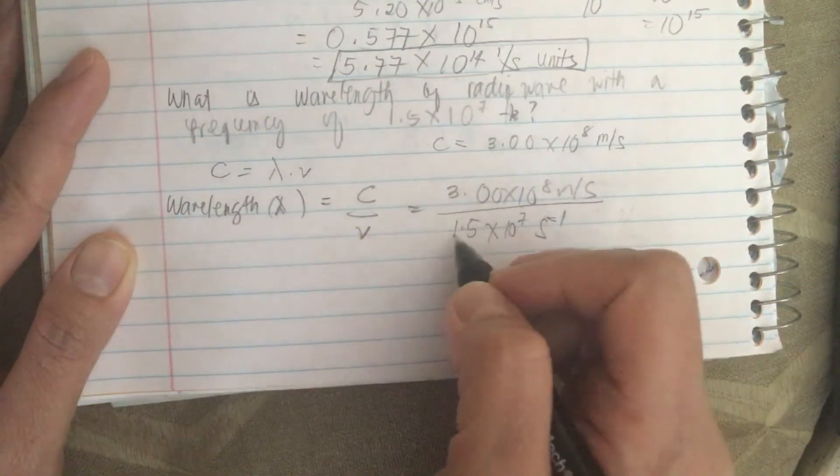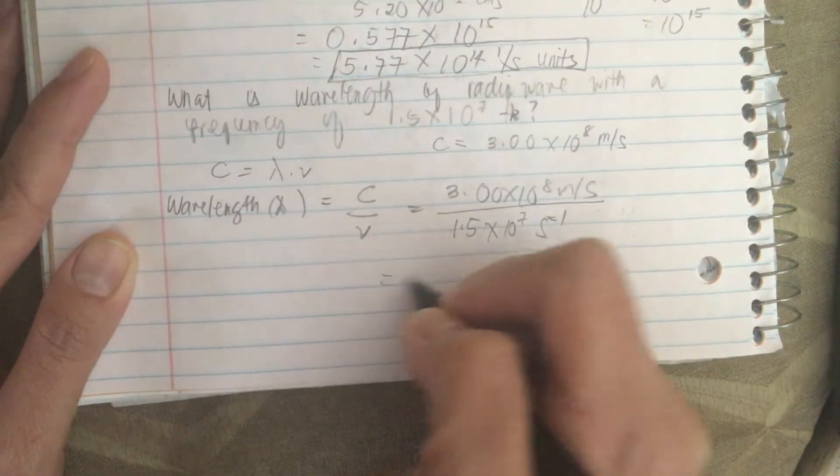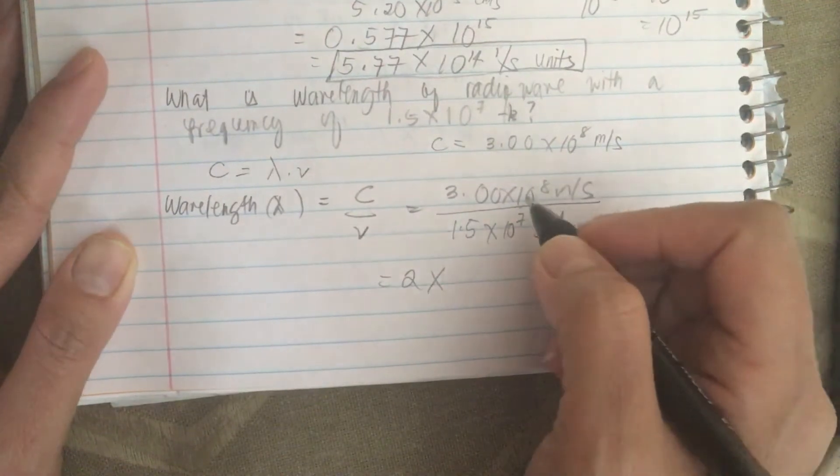Let's do the numbers over the numbers. So 3 divided by 1.5 is equal to 2. Now let's do the powers of 10.